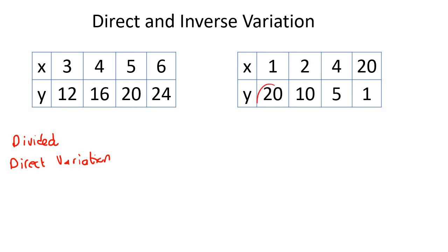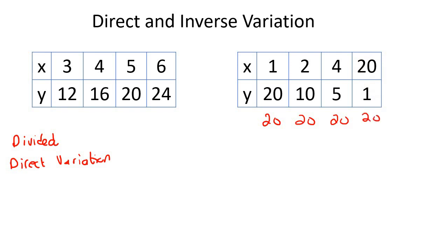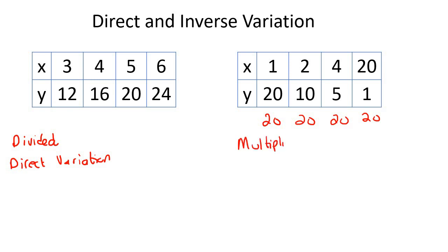Now try to divide the next set of numbers. 20 divided by 1 gives you 20, 10 divided by 2 gives you 5 — so that's not working. Let's try multiplying. 1 multiplied by 20 is 20, 2 multiplied by 10 is 20, 5 multiplied by 4 is 20. Here we multiplied the numbers and got the same answer, so that is an example of inverse variation. When you divide, that's direct; when you multiply, that's inverse.